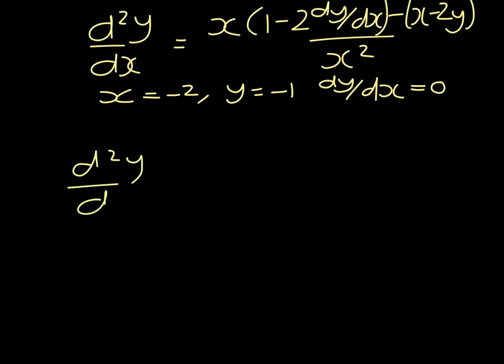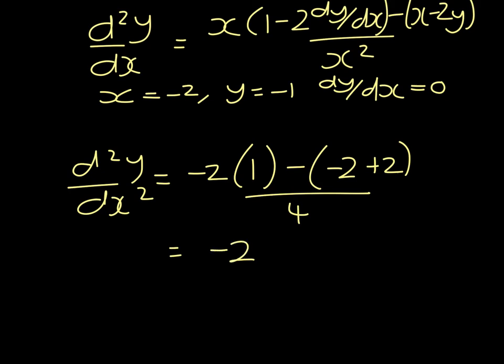d2y dx squared will equal minus 2 times 1 minus 0 minus x minus 2y all over x squared. So that's minus 2 take away 0 over 4, which is minus 1 half, less than 0. So we have a maximum.